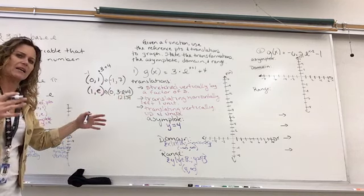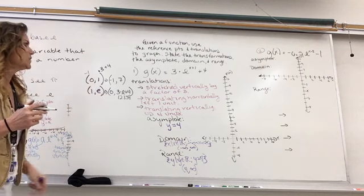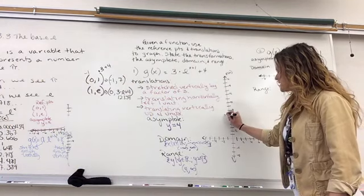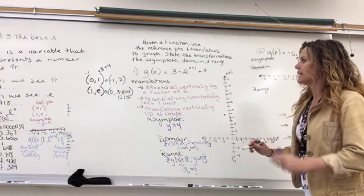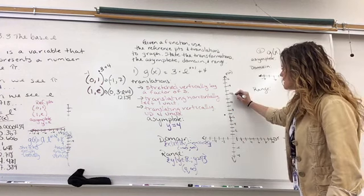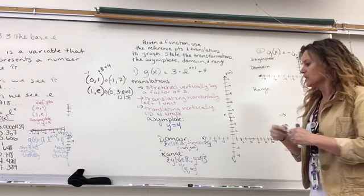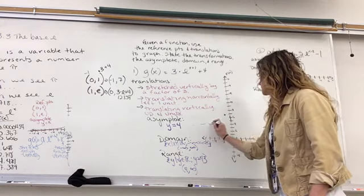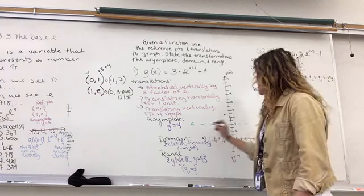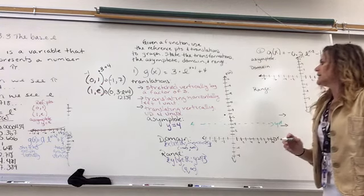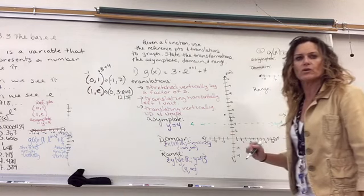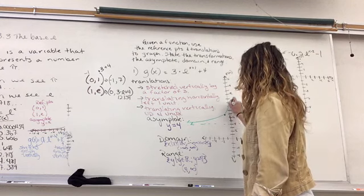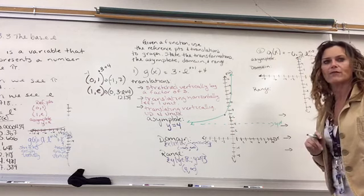Remember, e is about 2.718, so we plug it in and get that value. Now we're going to graph those values. At negative 1, I'm up at 7. And at 0, I'm at 12.1 — it's a decimal and it's approximate. We need to get our asymptote in at y equals 4. And remember, it's an uphill, so it's going to go in an upward motion and go through our values, getting really close. And there we go — we have our graph.